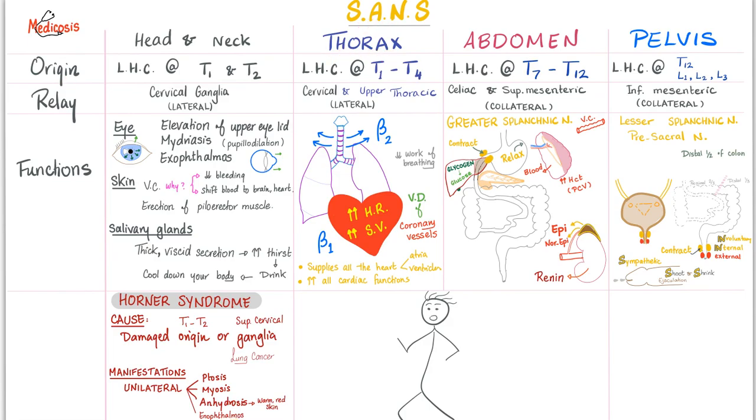Next, sympathetic in the thorax. Origin. Lateral horn cell T1 to T4. Yeah, the thorax takes four. Relay. Cervical and upper thoracic. This is part of the lateral or paravertebral ganglia. In the heart, I increase all the cardiac properties. Heart rate and stroke volume. In the lungs, I cause bronchodilation and I decrease their secretion. Do you want to cough some sputum while running from a tiger? Shut up.